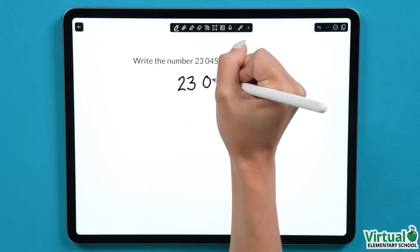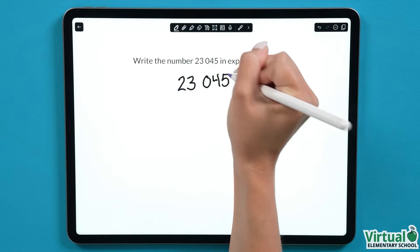We'll start by writing out that number, 23,045. The Expanded Form of a number shows the value that each digit in that number has.